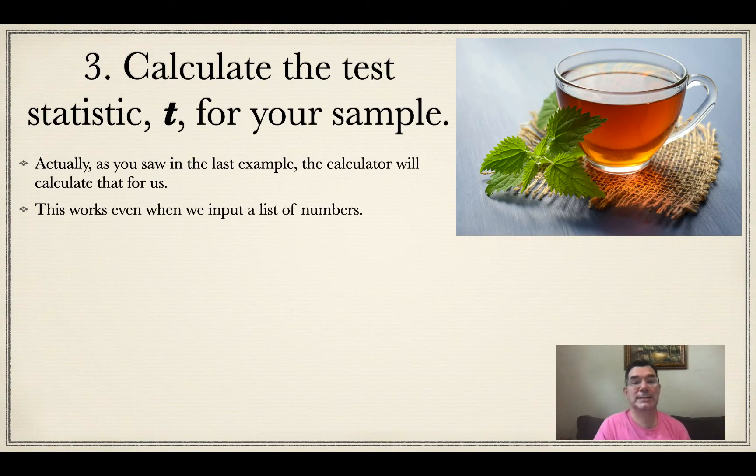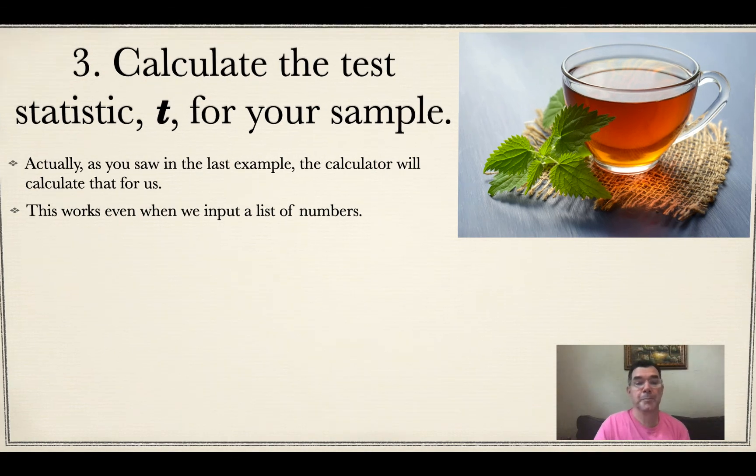We calculate our t statistic again, our test statistic. The calculator is actually going to calculate that for us. I could calculate x bar, I could calculate s, I could plug in the number of people. But actually, the test statistic is calculated for us whether I use variable or whether I put the list of numbers in myself.